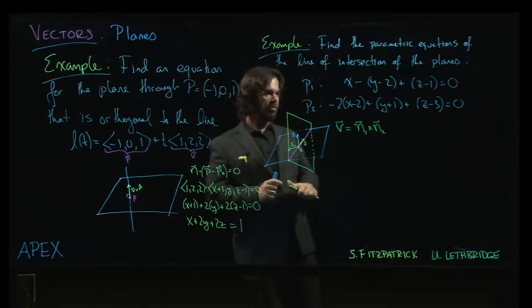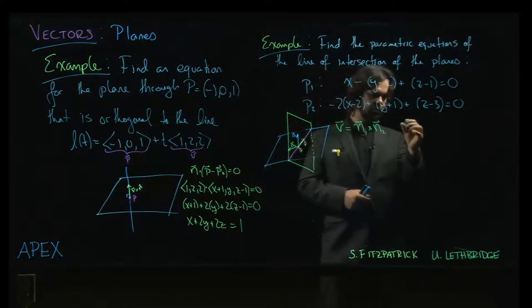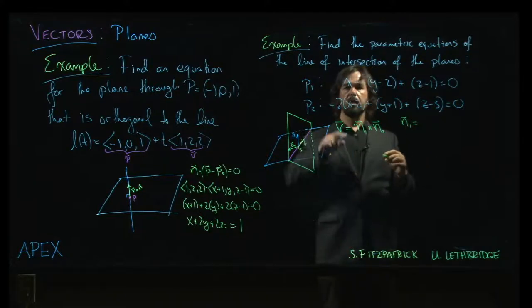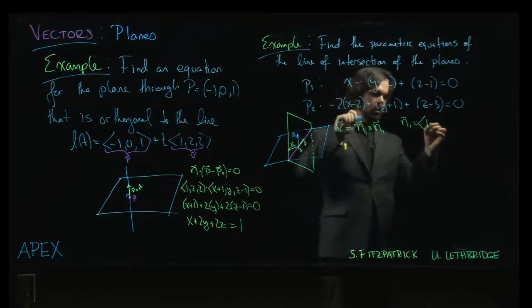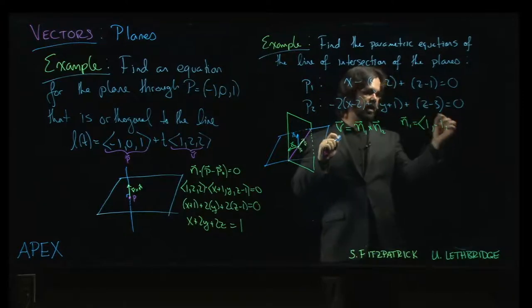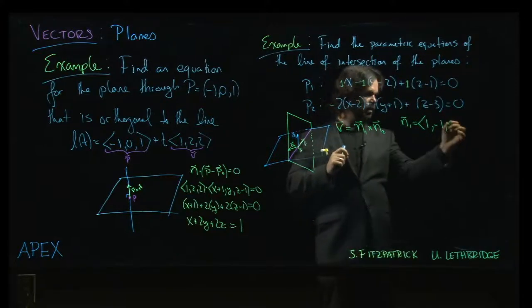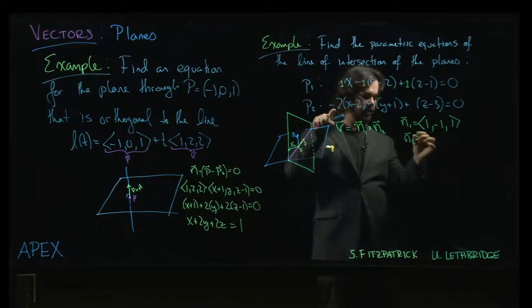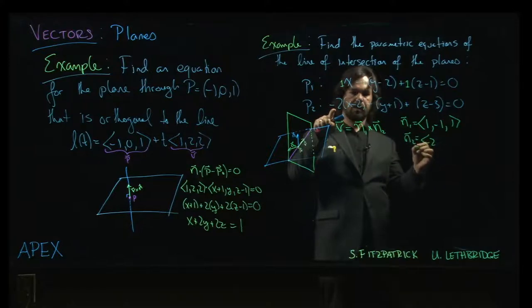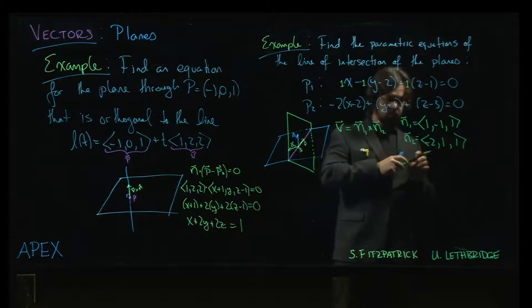Well, that tells us that the direction vector we want has to be the cross product of the two normal vectors. And how do we get those normal vectors? Remember that for each plane, the normal vector is given by the coefficients of our variables. So if I look at what is n1, the coefficient of x is 1, in front of y minus 1, in front of z, 1. There's like a 1 here. We just don't usually bother to write the 1's. And 2. We have minus 2 in front of the x, and then a 1, and then a 1.